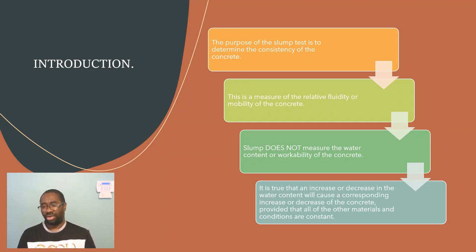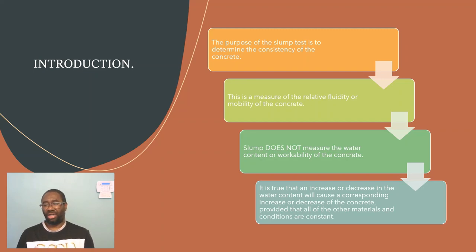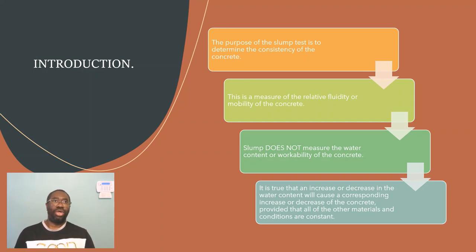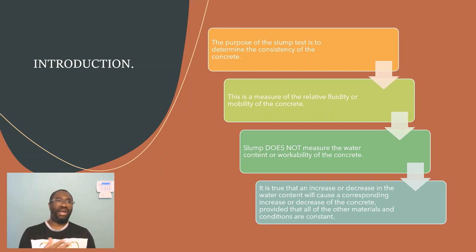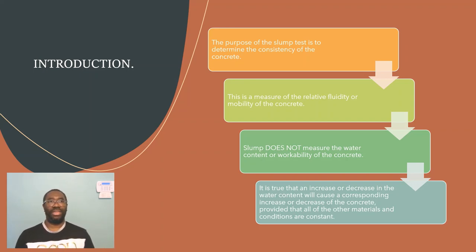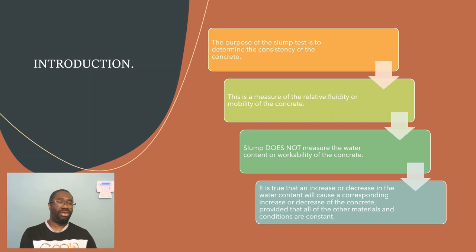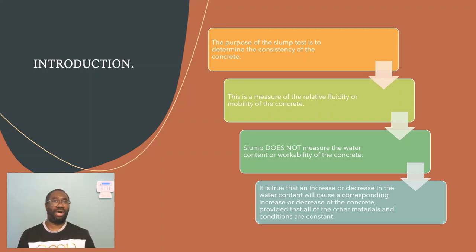While it is true that an increase or decrease in the water content will cause a corresponding increase or decrease of the concrete slump — providing that all other materials and conditions are constant — the slump is affected by all the components or all the ingredients that go into the concrete mix. Therefore it is not solely one component, chiefly the water, that determines if your slump is good or bad.